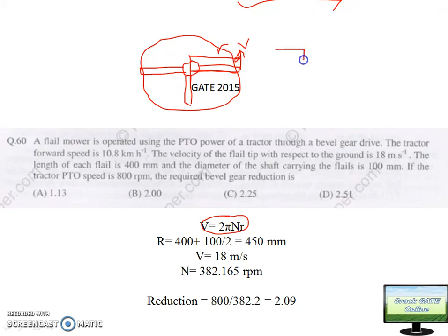In the question it is saying PTO power of tractor through bevel gear drive. PTO RPM is given: 800 RPM. So this is PTO. Here we are getting 800 RPM. After that, bevel gear reduction. There will be some sort of reduction here, and then it will finally go to the blades. So here we are getting 800 RPM. Here you need 382.165 RPM. So what should be the reduction here?